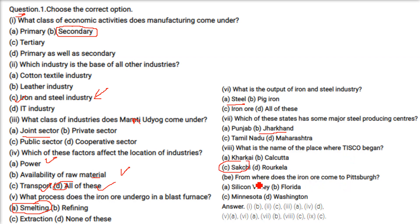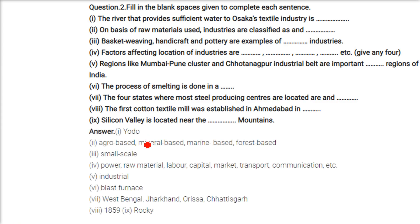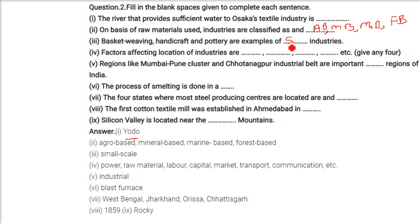From where does iron ore come to Pittsburgh? It comes from Minnesota to Pittsburgh. Fill in the blanks: the river that provides sufficient water to Osaka's textile industry is the Yodo river. On the basis of raw materials used, industries are classified as agro-based, mineral-based, marine-based, and forest-based.